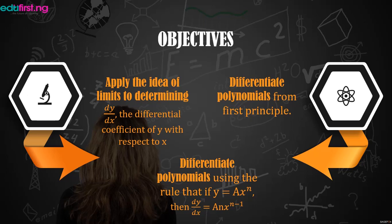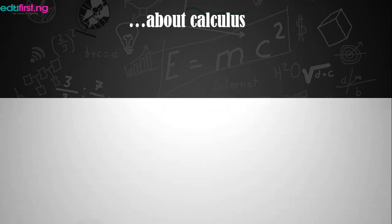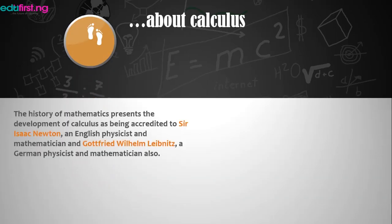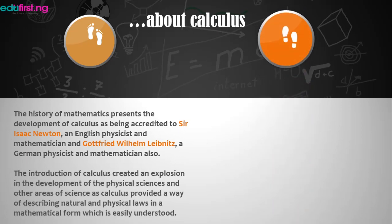These are what we should be able to achieve by the end of this class. Now, the history of mathematics shows that the development of calculus was credited to Sir Isaac Newton, a popular physicist, and Gottfried Wilhelm Leibniz, also a physicist and mathematician. The introduction of calculus created an explosion in the development of the physical sciences, as calculus provided a way of describing natural and physical laws in a mathematical form.